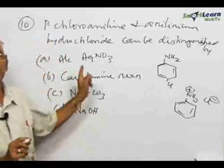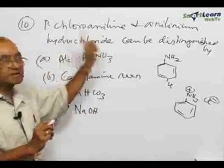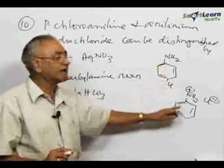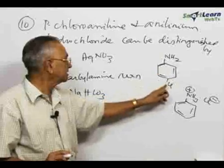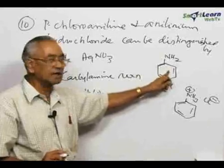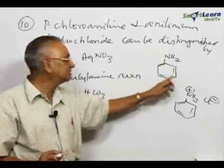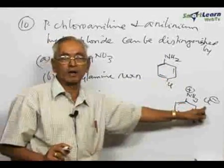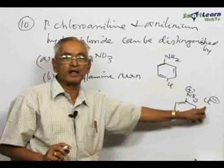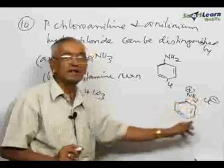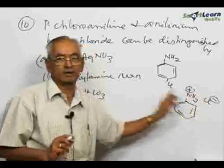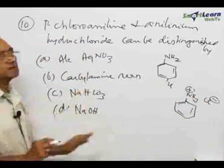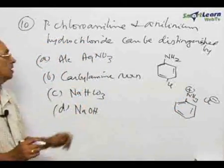The question is how to distinguish between these two compounds. It looks like both contain chlorine — but in parachloroaniline it is nuclear chlorine, whereas in anilinium hydrochloride it is only a chloride ion as a counter ion for the anilinium positive ion. Four choices are given.